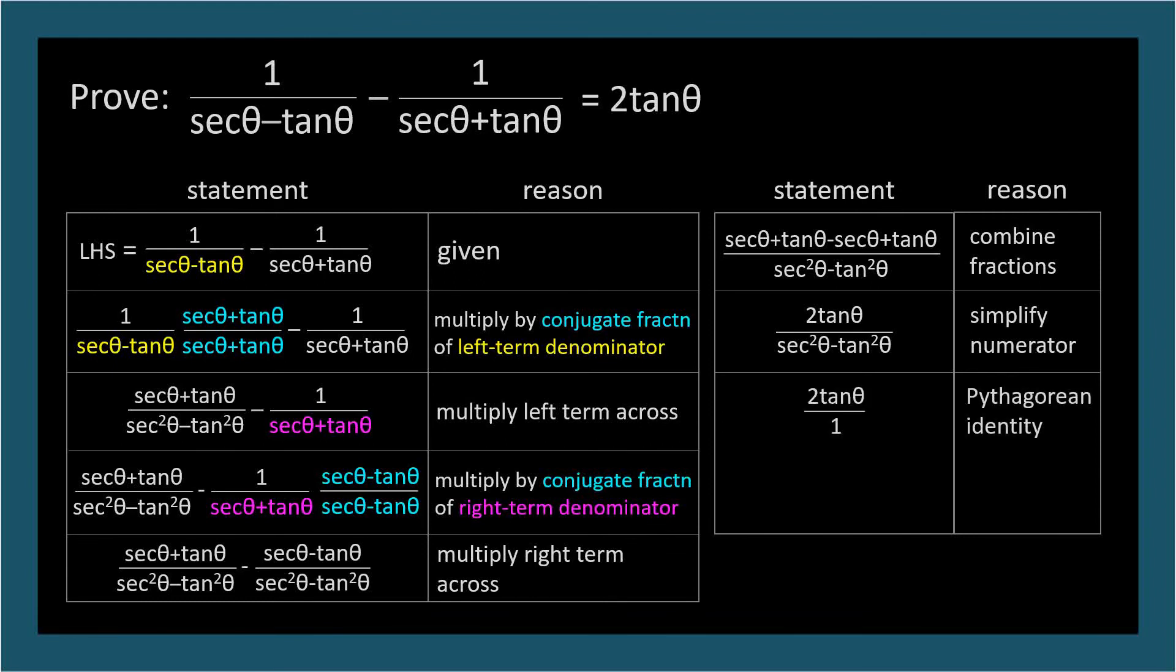The denominator, secant squared theta minus tangent squared theta, is equivalent to one by the Pythagorean identity. So we can simplify to two tangent theta, which is the right-hand side.